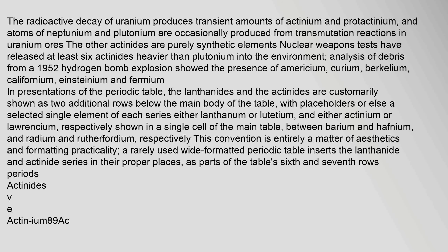With placeholders, or else a selected single element of each series — either lanthanum or lutetium, and either actinium or lawrencium — respectively shown in a single cell of the main table, between barium and hafnium, and radium and rutherfordium, respectively. This convention is entirely a matter of aesthetics and formatting practicality. A rarely used wide-formatted periodic table inserts the lanthanide and actinide series in their proper places as parts of the table's sixth and seventh rows.